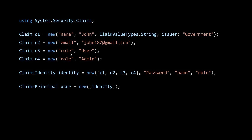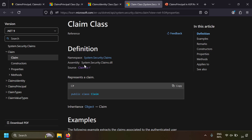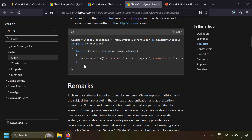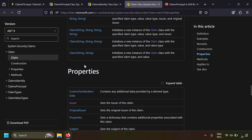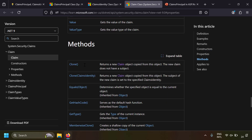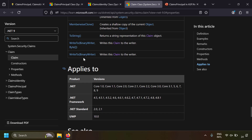You can give one claim which is role user, and another claim which is role admin. Using claims identities, you can create a claims principle. In the blog post I have given the link to the claims class in the Microsoft documentation, where you can learn about the properties, constructors, and methods. I have also given links to the claims identity class and the claims principal class documentation.